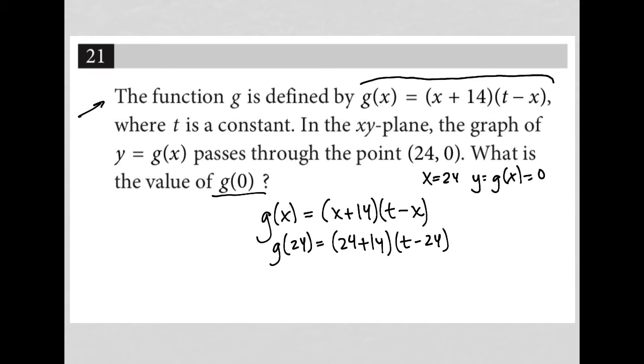When x is 24, g(x) is 0. So I can write this as 0 = 24 + 14(t - 24). So it looks like I'll be able to solve for t in this case.